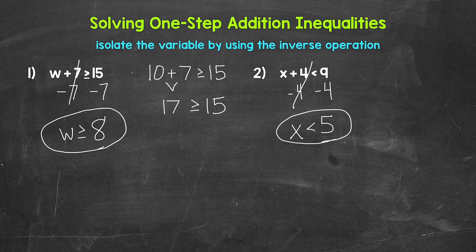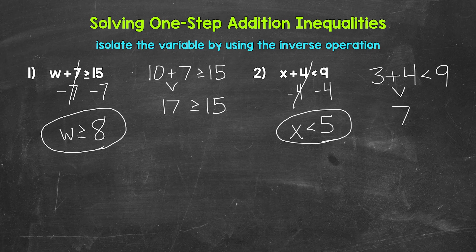So any value less than five is a solution of this inequality — it makes it true. Let's check one. We can pick any number less than five. Let's use three. So plug in three for x. We have three plus four is less than nine. Three plus four gives us seven. Seven is less than nine. So we are correct. Our answer for number two: x is less than five. Any value less than five will make this inequality true.